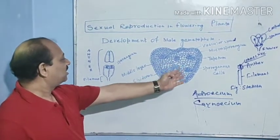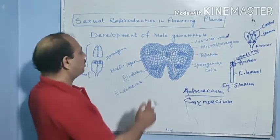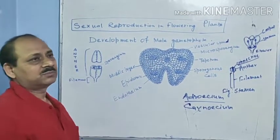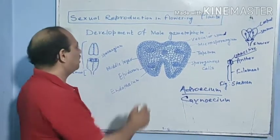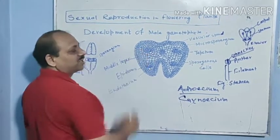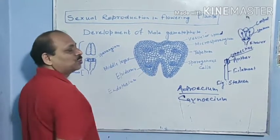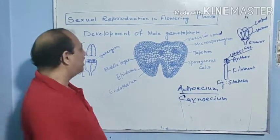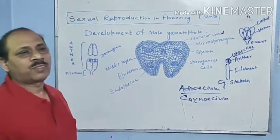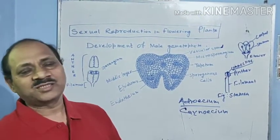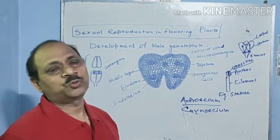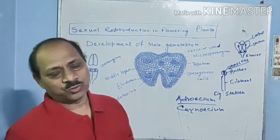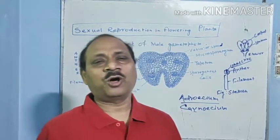Here is the section of the anther. In the microsporangium, the wall consists of four layers. The outermost layer is known as epidermis, the second layer is known as endothecium, and the third layer is middle layers. The innermost layer is known as tapetum. Tapetum provides nourishment to the microspore mother cells. Its next function is it secretes enzymes or hormones, and it also helps in the formation of exine.